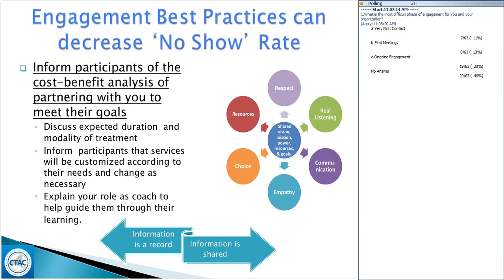We want to inform participants of the cost-benefit analysis of partnering with you to meet their goals. Give them information to make informed decisions: how long do you expect them to come to you — is it 10 weeks, 12 weeks, weekly, monthly? Tell them the modality you plan to use in therapy, and your role in assisting them. This allows the participant to make an informed decision about whether the plan is realistic and feasible. We move from information being just documented in a record to being shared with participants, allowing them choices.